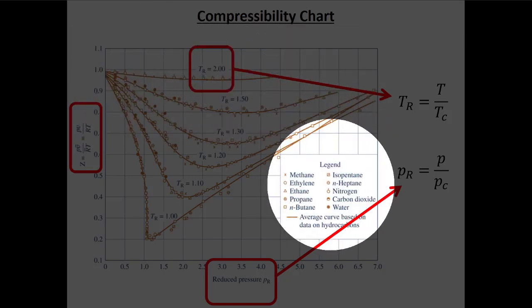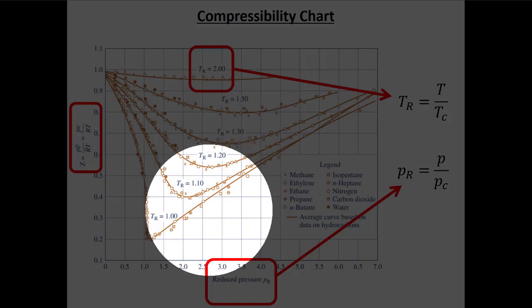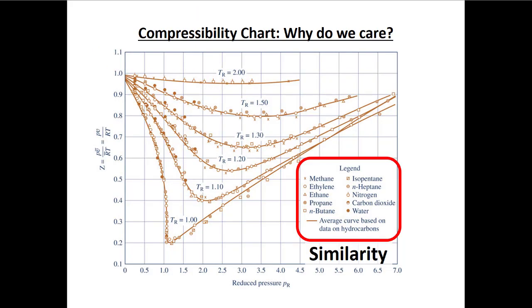Points at the same reduced temperature all line up regardless of which gas you're using. Different gases are represented by different symbols, but they basically all collapse, and whoever made this graph drew a line through all those points. We call this similarity — when all these things collapse it means we've defined the dimensionless parameters correctly and can use the same equation to predict the behavior of all of them.